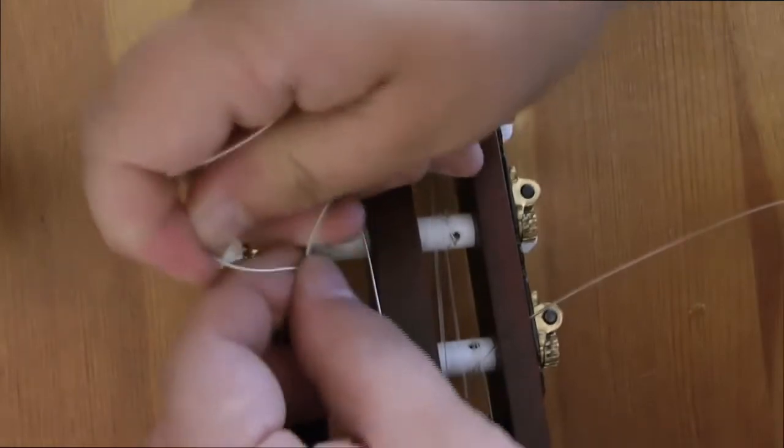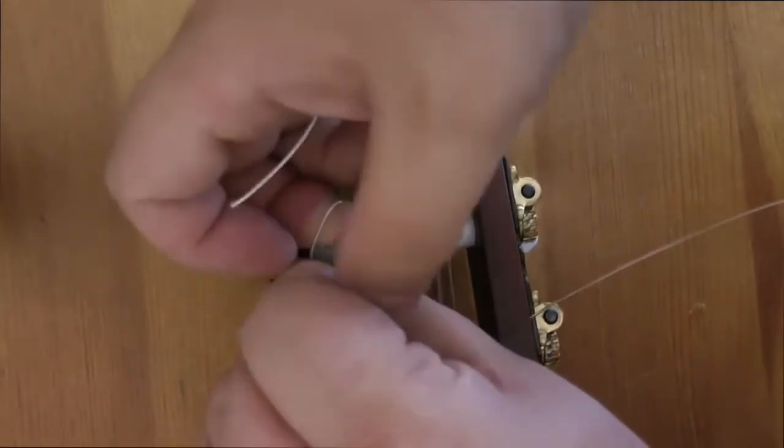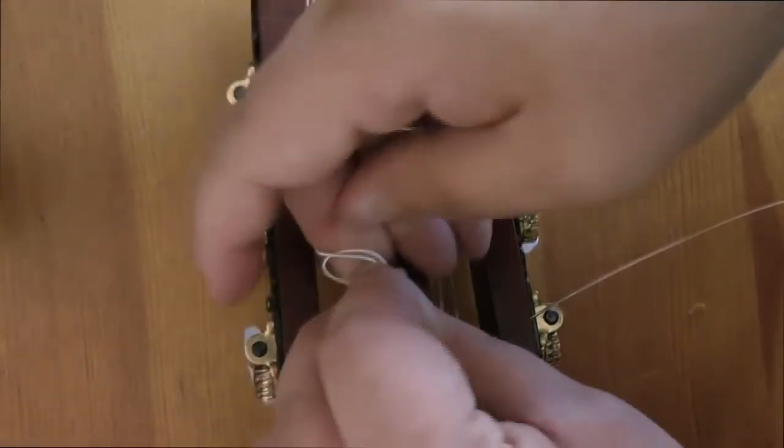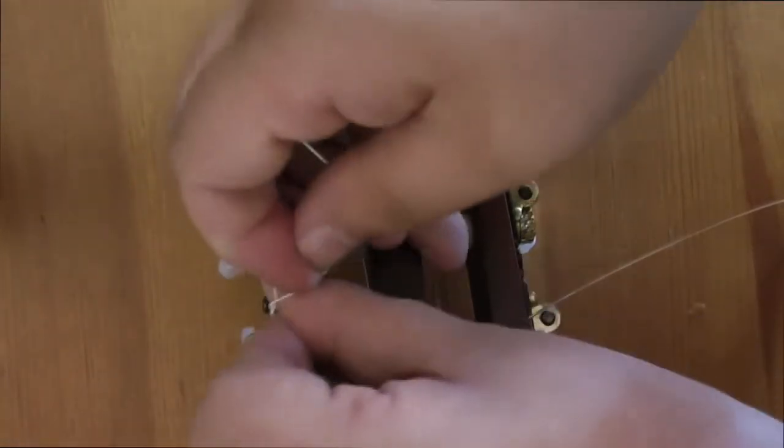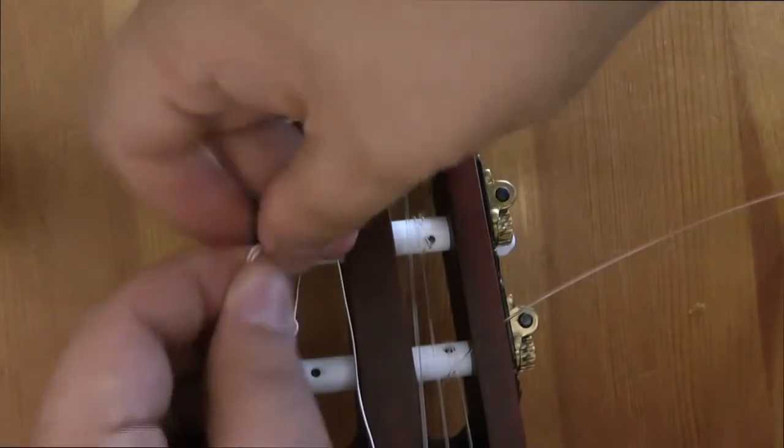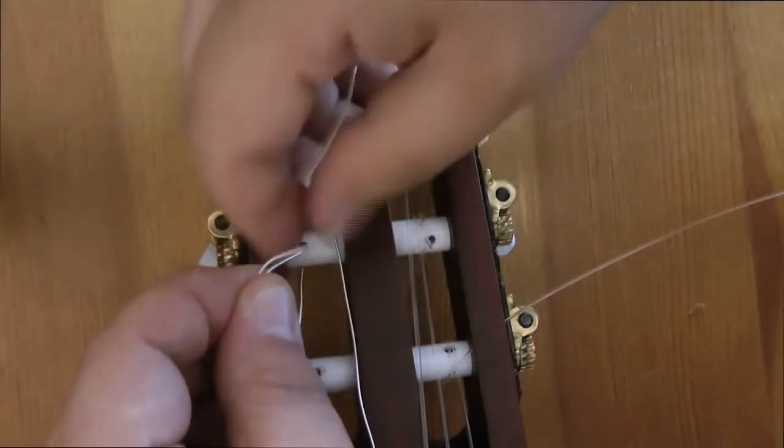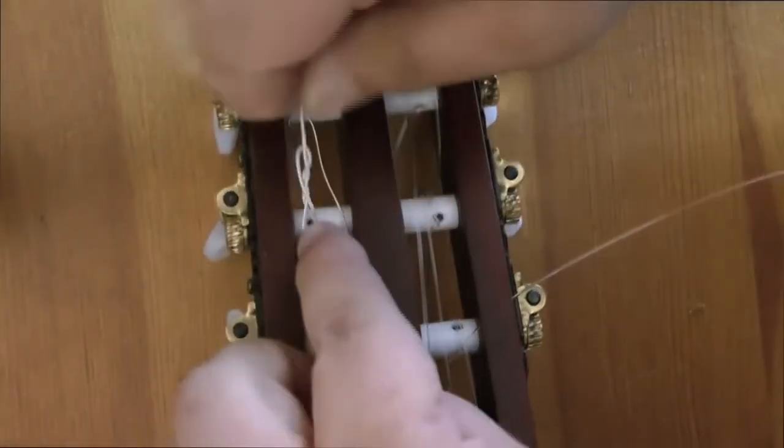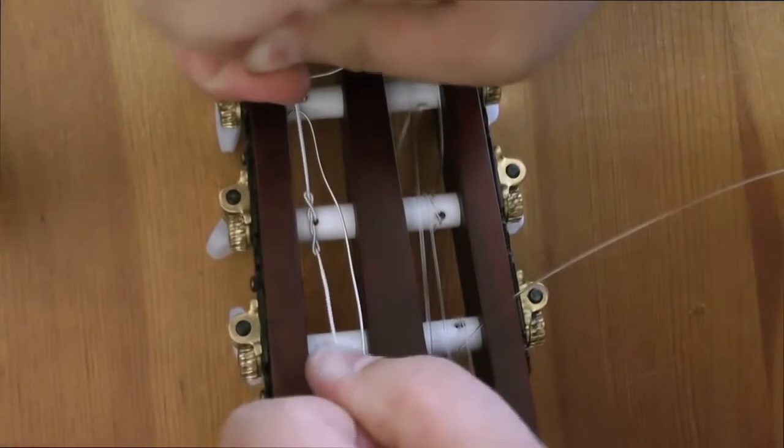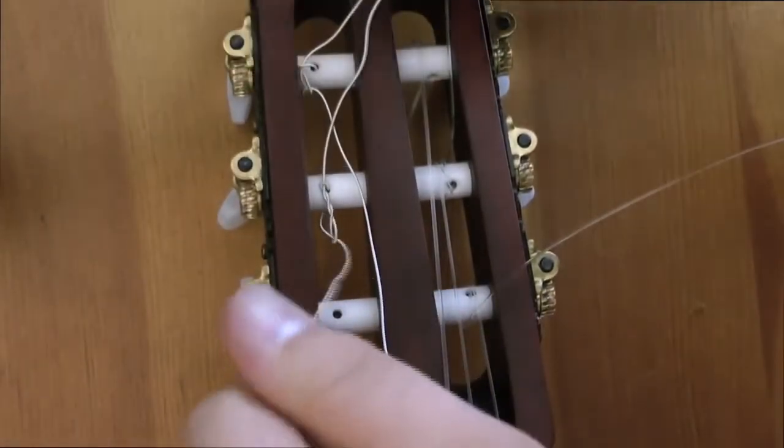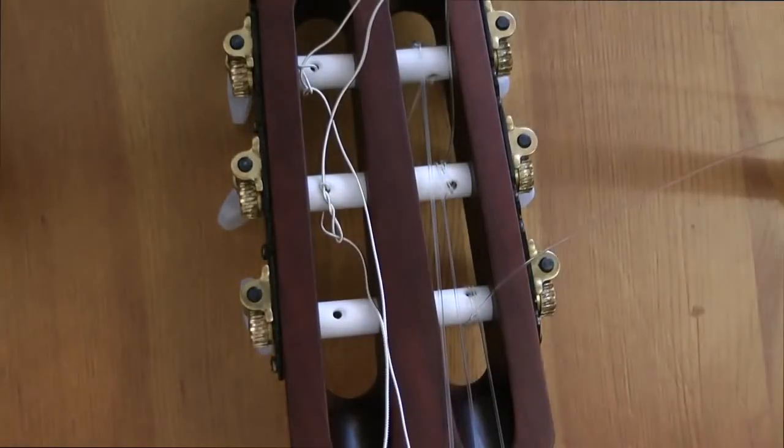The good thing about these strings is they are quite durable. They're not as flimsy as steel strings on electric guitar. Sometimes you can bend those and put kinks in them by accident. With these strings, you can be quite forceful with them. You're not gonna snap them or bend them or put a kink in them. They are quite tactile and malleable. As you can see, as I'm doing this. Again, it's all a matter of getting the knots in the right place and tightening it up. And there we go.